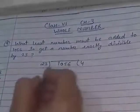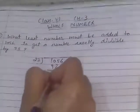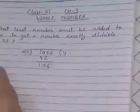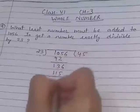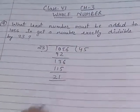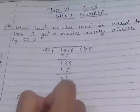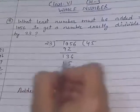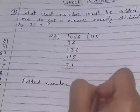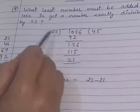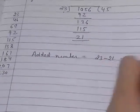Write down the table of 23. 92, carry 6, then 136, 115, at 5th place 21. Now the added number - what is the method to find out the added number from divisor? Subtract the remainder. 23 minus 21 equals 2, so added number is 2.